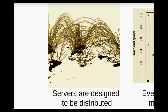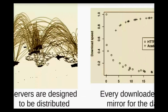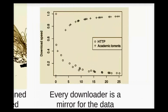Universities, research groups, and anyone else can selectively mirror the content that they decide is important. Downloading a file also acts to mirror it, which allows the system to deal with scale organically — as more people download, the faster download speeds become.